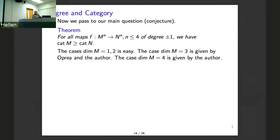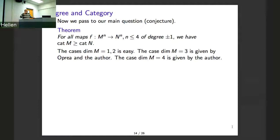It is easy to see that if you have a manifold with a degree-one map from M to N, then the category of the domain M is greater than or equal to the category of the range N, because for maps of degree one you have a monomorphism in cohomology. So if you have a non-trivial cup product in the cohomology of N, then you have a non-trivial cup product in the cohomology of M. So we have this approximation: we don't know it for category itself, but for cup length it works.